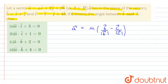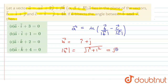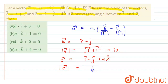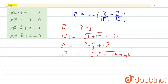Since vector b is given as î + ĵ, the mod of b is √(1² + 1²) = √2. The value of vector c is î − ĵ + 4k̂, and the mod of c is √(1² + (−1)² + 4²) = √(1 + 1 + 16) = 3√2.